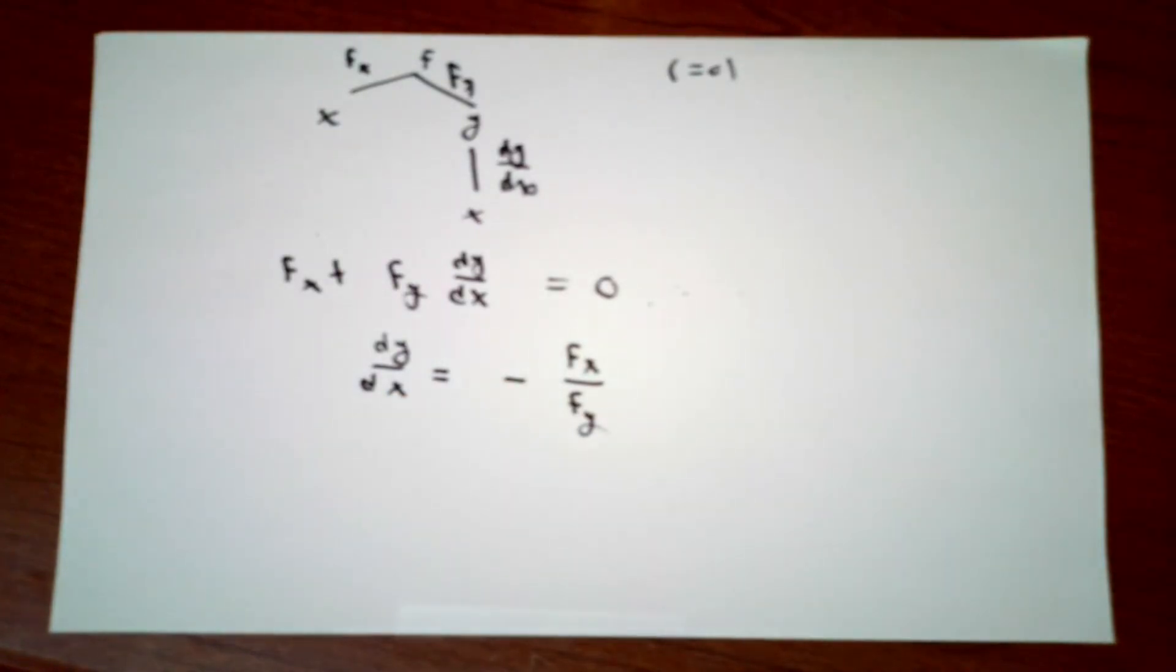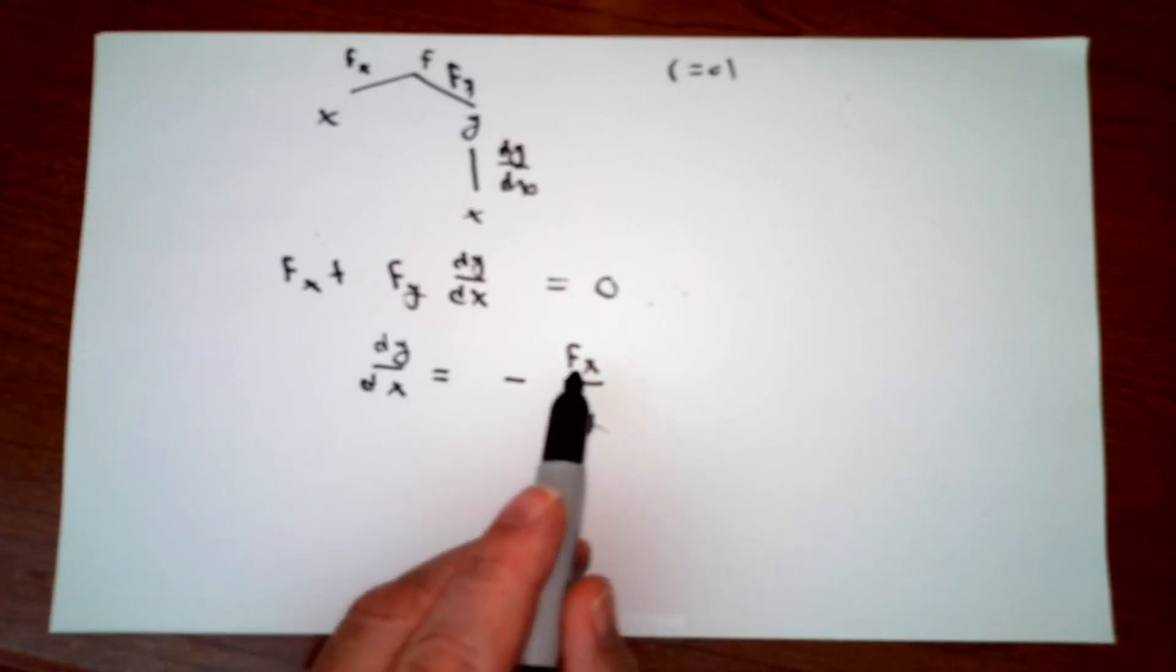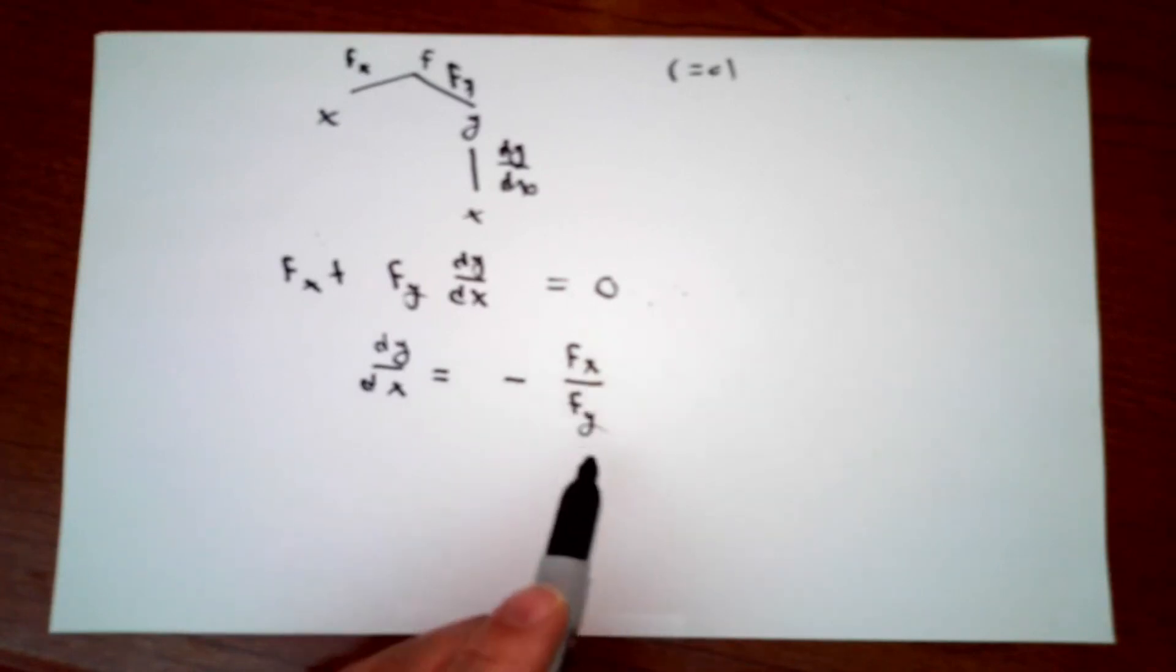If I know how to do partial derivatives, I can just write the answer down. The slope of the tangent line is the negative of partial of f with respect to x divided by partial of f with respect to y.